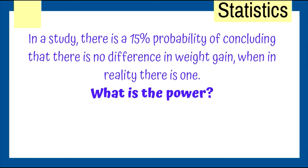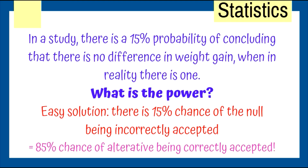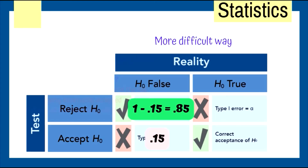In a study, there's a 15% probability of concluding there's no difference in weight gain when in reality there is one. What is the power? The null hypothesis is that there's no difference. There's a 15% chance the null is incorrectly embraced — meaning 85% chance the alternative is correctly accepted. That's the power: 85%. You can also use the type I/type II error chart, which you may choose to memorize.